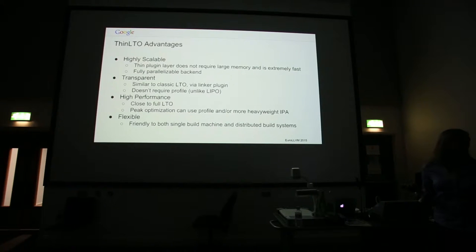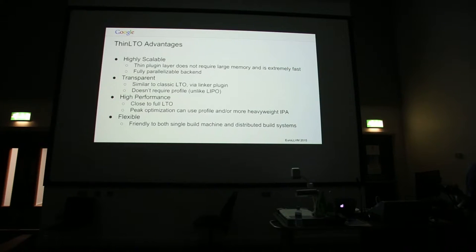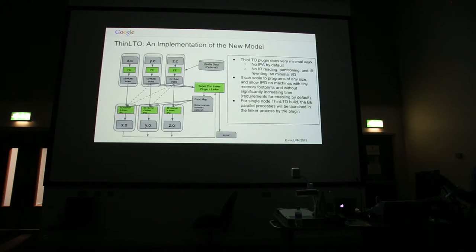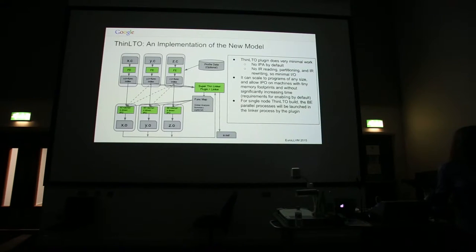You have to have gone through the front end before you can collect all the indices. The dash-C compile and the serialization happen in parallel for each module. For each translation unit, you can do all your dash-C things in parallel, and then they all just synchronize at the linker step. Each of these dash-C compiles is just clang dash-C dash-flto dash-whatever — nothing changed in that part, except for generating the function index.